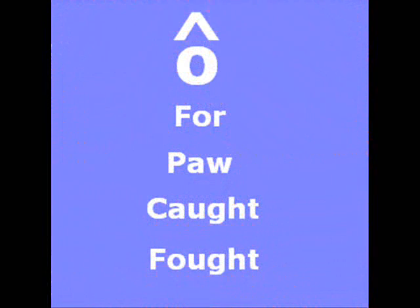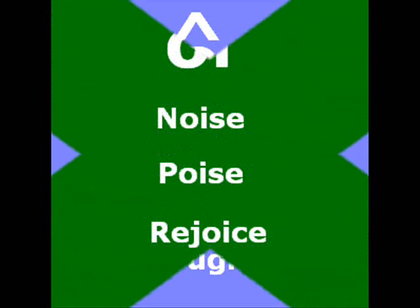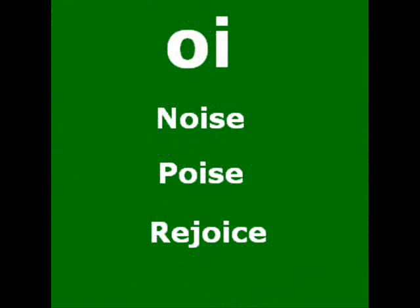Next is 'AW', as in for, paw, caught, fought. The pronunciation for this particular symbol would be 'AW'. Next is 'OI', as in noise, poise, rejoice. Wherever you see this particular symbol in your dictionary, the pronunciation would be 'OI'.